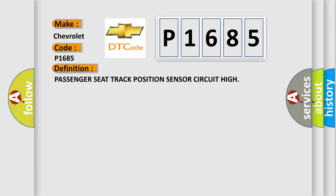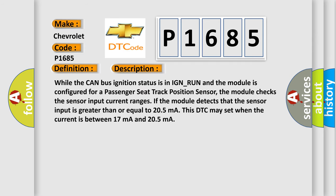Here is a short description of this DTC code. While the CAN bus ignition status is in IGN_RUN and the module is configured for the passenger seat track position sensor, the module checks the sensor input current ranges. If the module detects that the sensor input is greater than or equal to 205 milliamperes, this DTC may set when the current is between 17 milliamperes and 205 milliamperes.